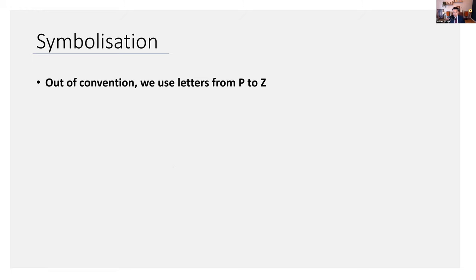More about symbolization. We use letters P from Z out of convention. I used W and P previously, and we should stick to P to Z. A to O is really reserved for other things. You don't have to memorize any of this. It's just helpful terminology for us moving forward.